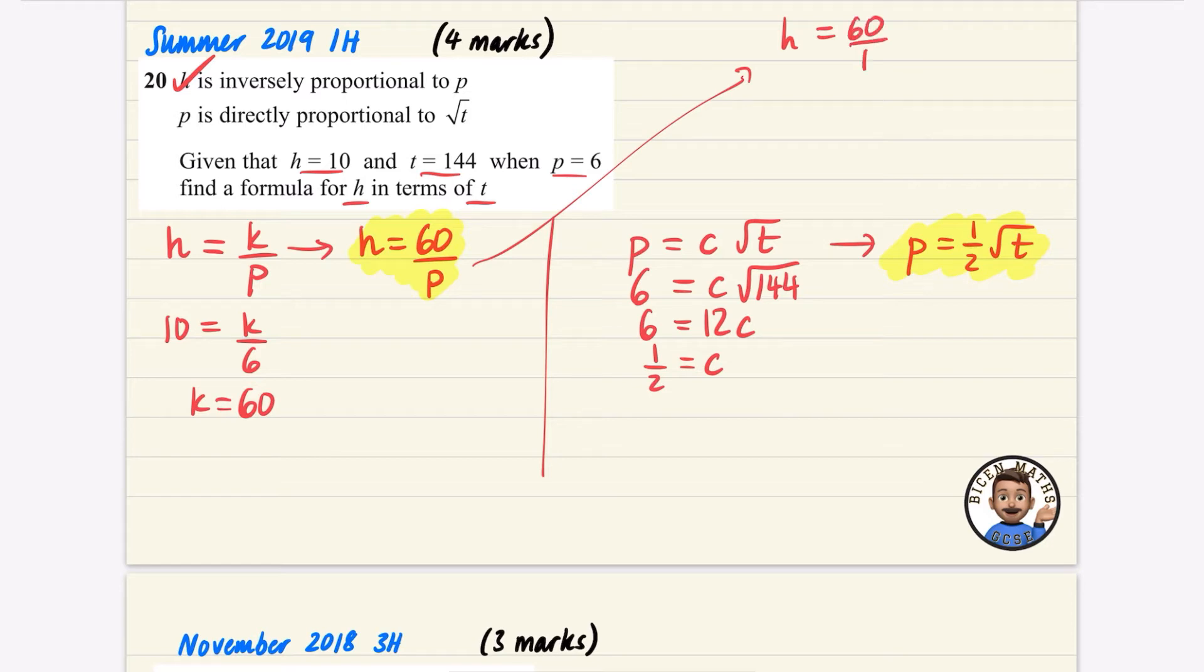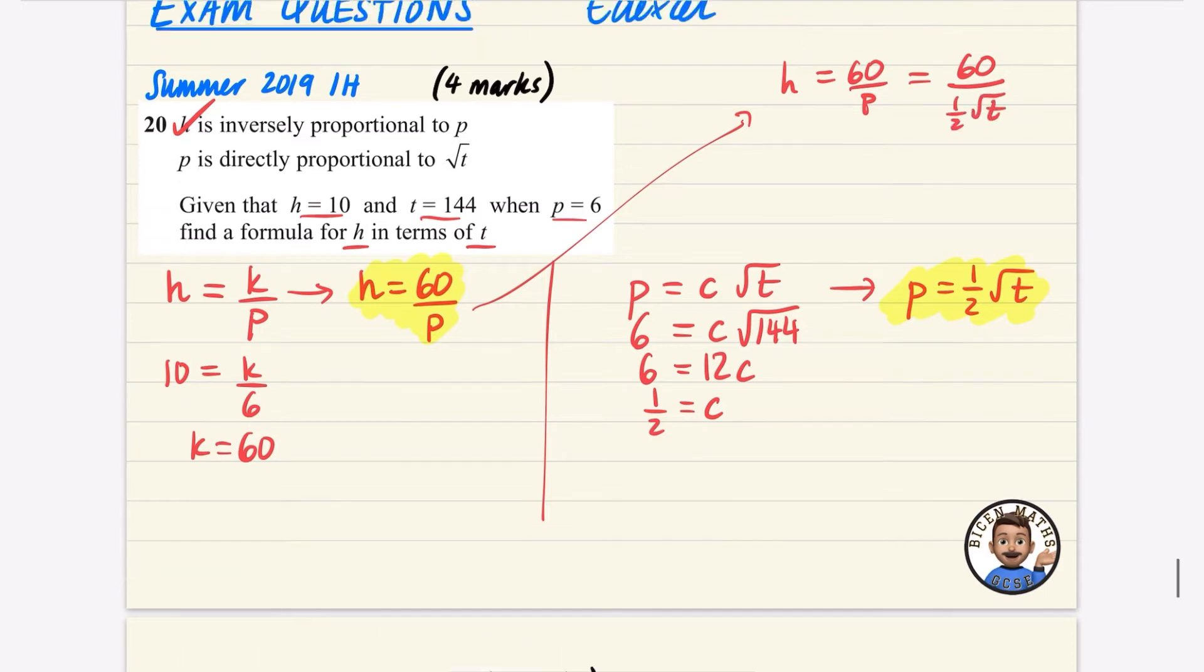H equals 60 over P. Well, 60 over P is a half root T. So that means I've basically got my answer here.